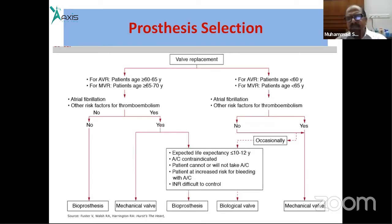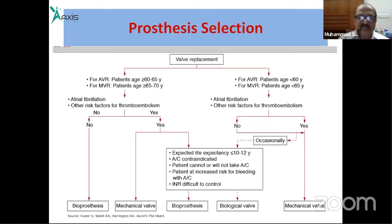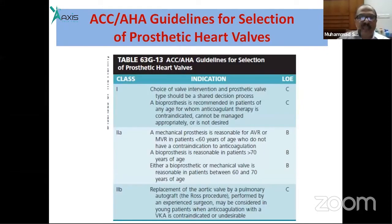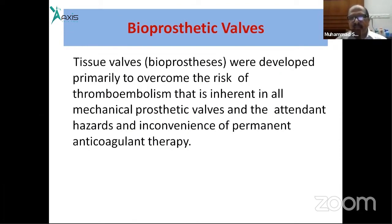For young patients who wish to continue pregnancy or family planning, bioprosthetic valve is preferred. When life expectancy is limited, bioprosthesis may also be chosen. When atrial fibrillation is already present and anticoagulation is definitively required, a mechanical valve should be given.